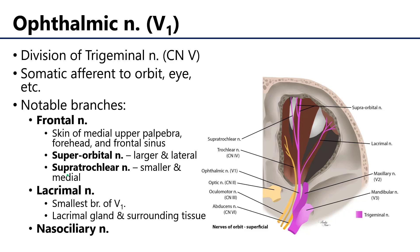Now let's take a step back to branches of the trigeminal nerve — in particular, the ophthalmic nerve, or V1. There are three divisions of the trigeminal nerve: ophthalmic, maxillary, and mandibular — V1, V2, and V3, respectively. The ophthalmic nerve is mostly somatic afferent from the orbit, the eye, and some of the surrounding areas. Some of its notable branches include the frontal nerve.